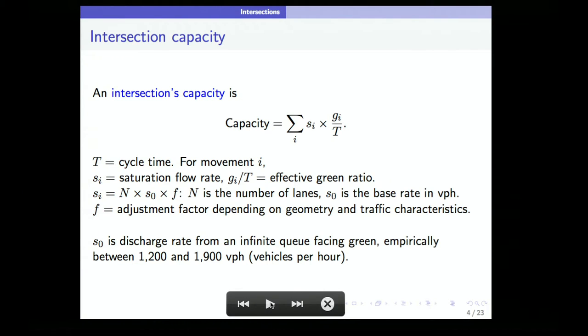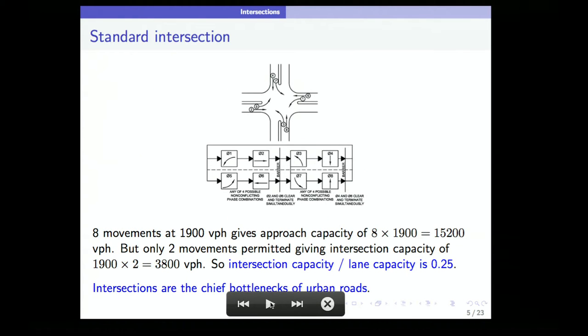Typically the saturation flow rate per lane is between 1,200 and 1,900 vehicles per hour. Let's take this particular standard intersection. Instead of considering twelve movements, I'm going to ignore the right turn because you can do that at any time. So from each direction you have two movements: a through movement and a left movement, so you have eight in all.